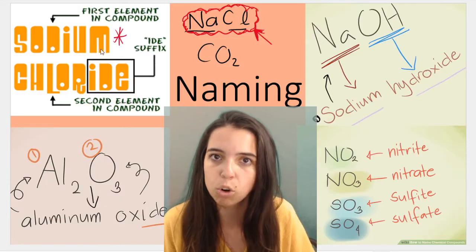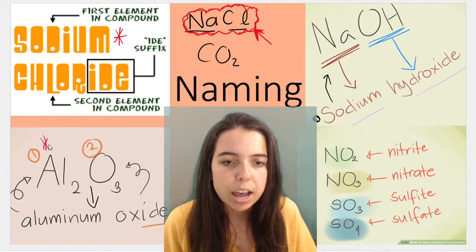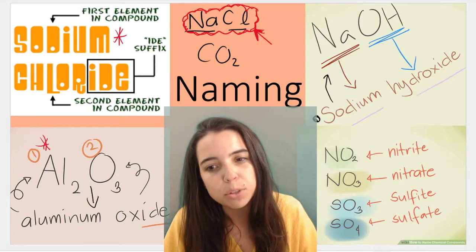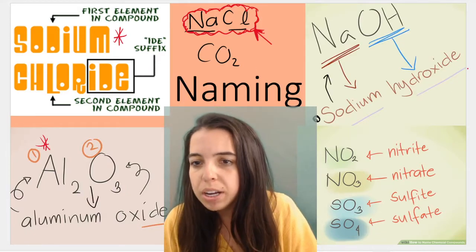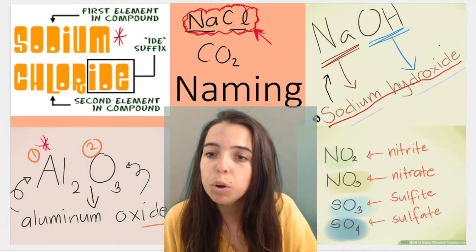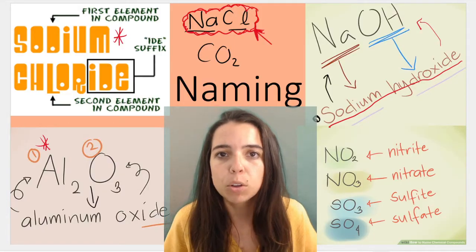In this case sodium chloride, or for example over here we've got aluminum oxide. So you need to be able to do that, but you also need to be able to go backwards. If I give you the chemical name, such as sodium hydroxide, you need to work backwards and give me the chemical formula.